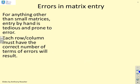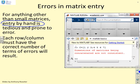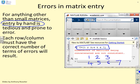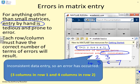For anything other than small matrices, entry by hand is rather tedious and prone to error, because each row and column must have the correct number of terms, otherwise the command will fail. Here's an example of a command which has failed: I've put c equals 1 2 3 semicolon 4 5 6 7. The two rows are not the same length — three terms on the top row and four on the second. MATLAB tells you it's an inconsistent expression.